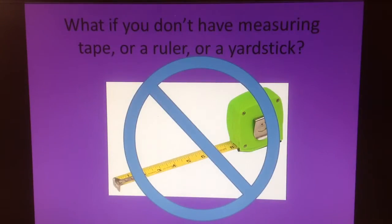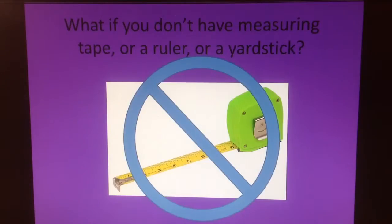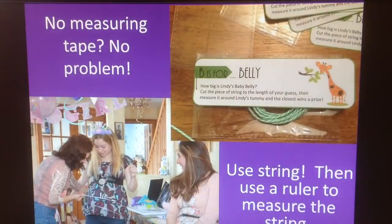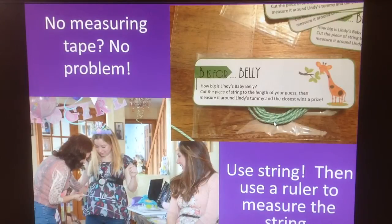What if you don't have a measuring tape, ruler, or yardstick and you're trying to measure something? Well, if you're trying to measure something curved, you can use string and then measure it against a ruler when you do have one — cut the string to the right size and measure it. At baby showers, they sometimes play a game where you get some string and cut it to your guess of how big the pregnant belly is, then measure and see who's right.